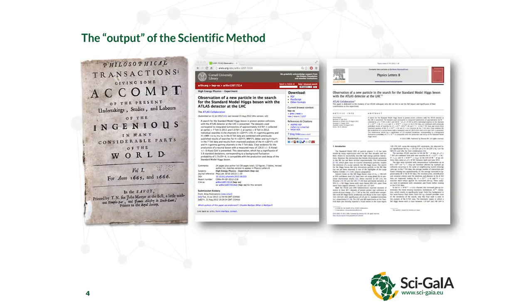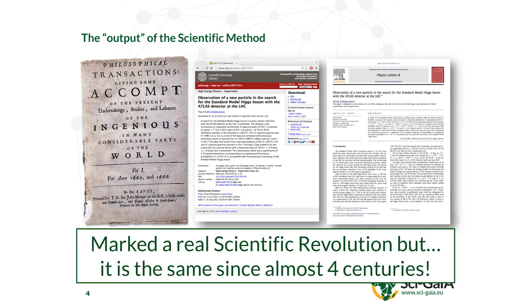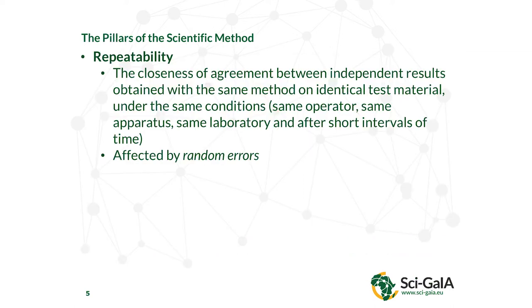The first scientific revolution happened in the middle of the 17th century when the first scientific journals came up. This marked a real revolution, but it's essentially the same since almost five centuries. Careers and visibility are based on scientific papers, which is the main output of scientific research. The scientific method stands on two fundamental pillars: repeatability and reproducibility.